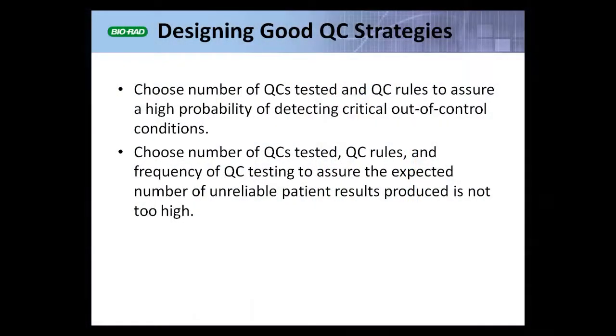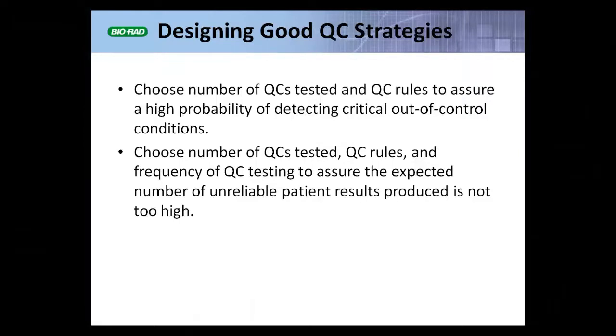Now, there have been decades of work done on approaches to designing good quality control strategies. I list two of them here. One approach is to choose the number of QCs tested and the QC rules to assure a high probability of detecting critical out-of-control conditions. This is the approach that was developed and has been advocated by Jim Westgard for many years now.